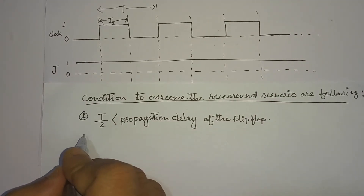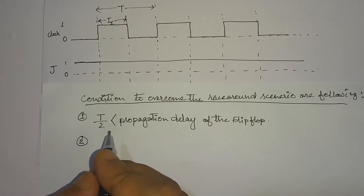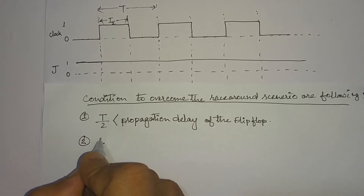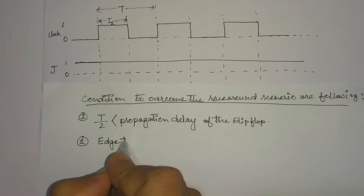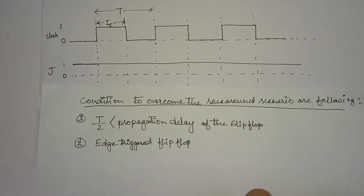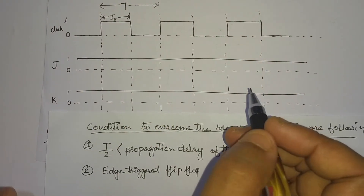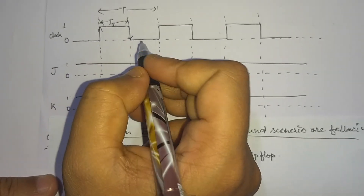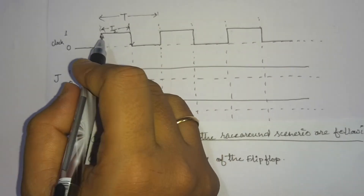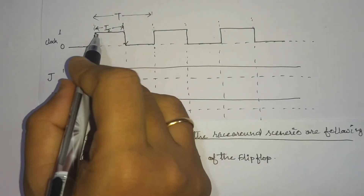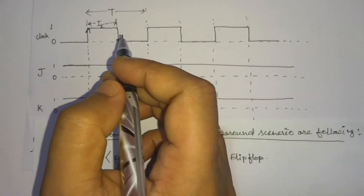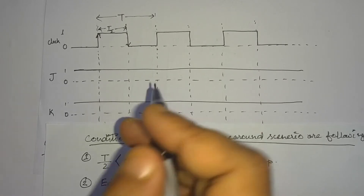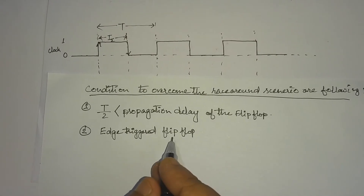Another condition to eliminate the race around condition is to use an edge-triggered flip-flop instead of a level-triggered flip-flop. The flip-flop responds to the rising edge or falling edge of the clock, so it is not sensitive to the entire high level of the clock. This eliminates the race around condition.